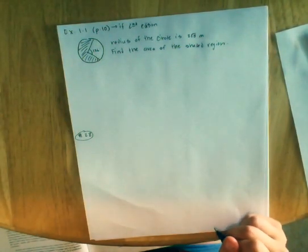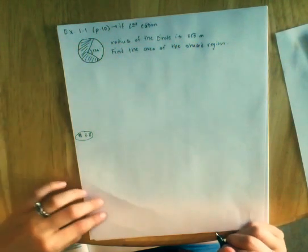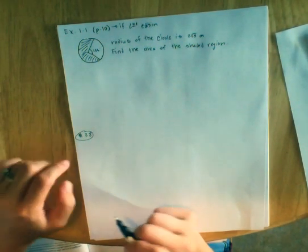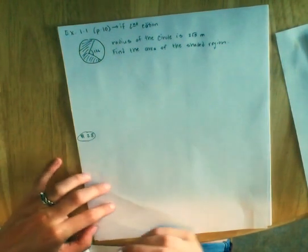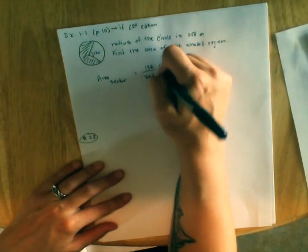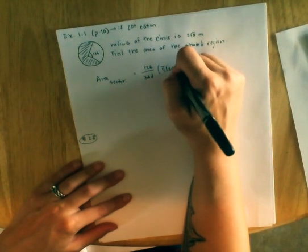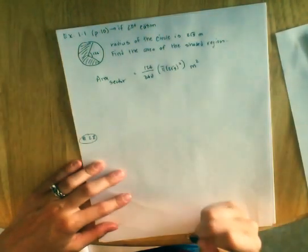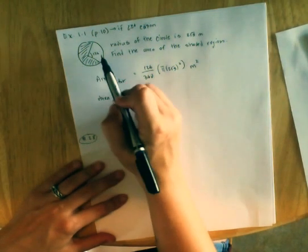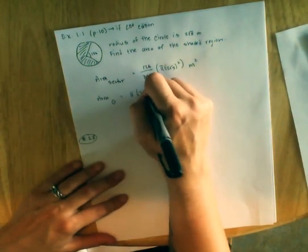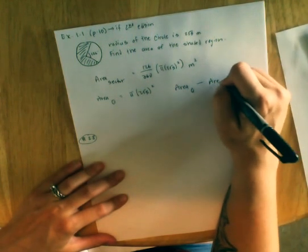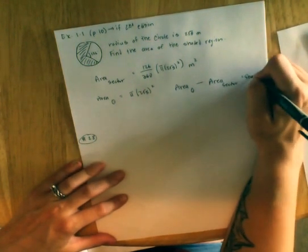Well, the first thing that we do is we are going to find the area of this sector. Now, there are two ways you can do this problem. You can find the area of this sector. So we would say that the area of the sector is 126 over 360 times pi r squared. This would be meters squared. Then we would find the area of the whole circle, which would be pi r squared. And we would do the area of the circle minus the area of the sector, and that would give us the shaded region.